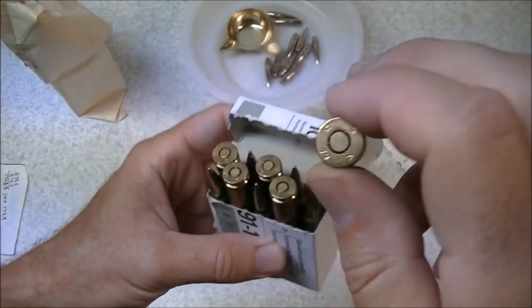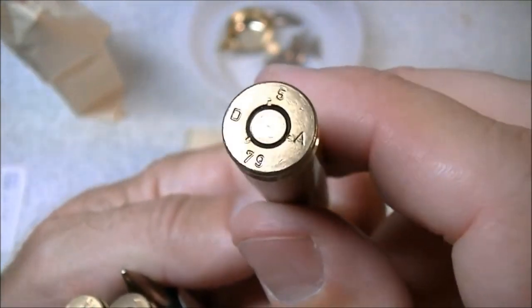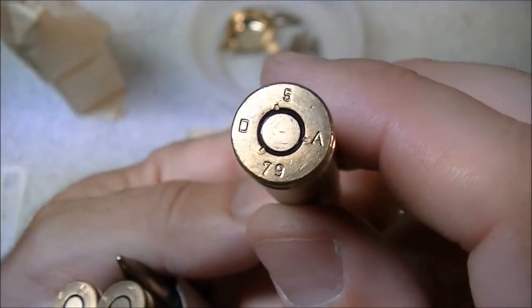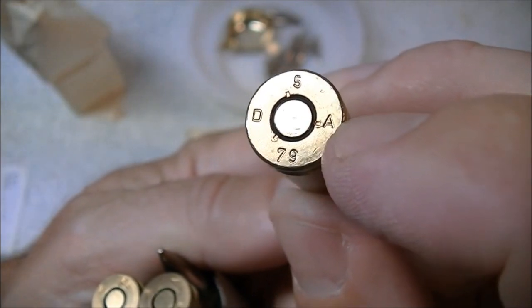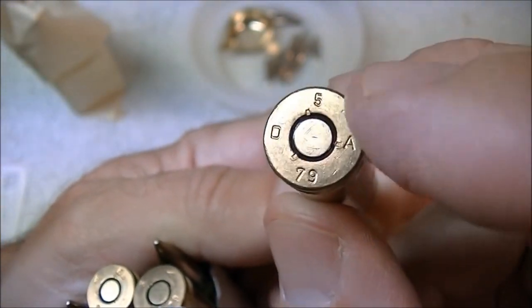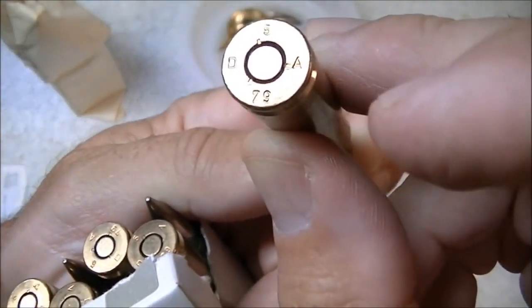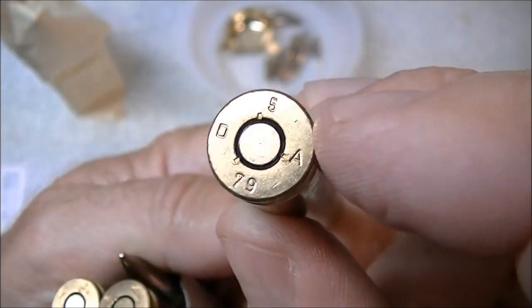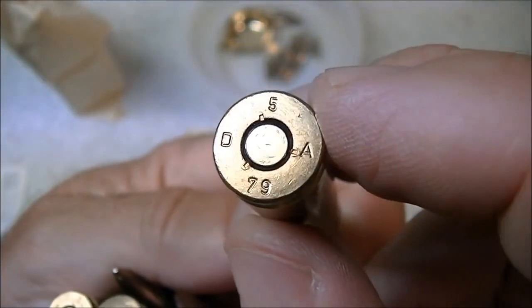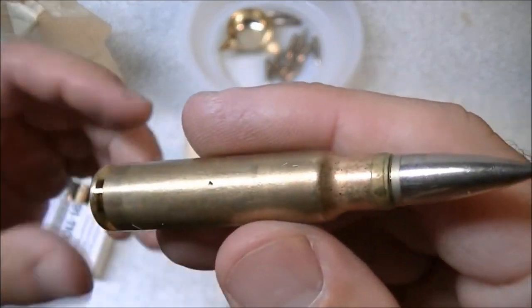This ammunition here, if we can get up really close you can see there are letters on it. DA, I believe that designates the manufacturing facility and the year is the bottom number, 1979 in this case, and the top is the month. So that's what the ammunition looks like out of the box.